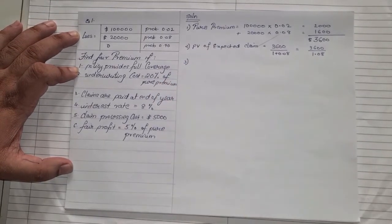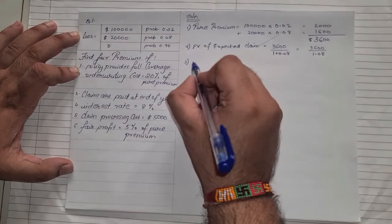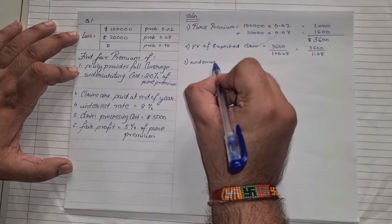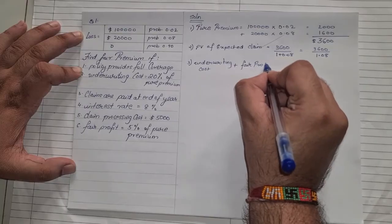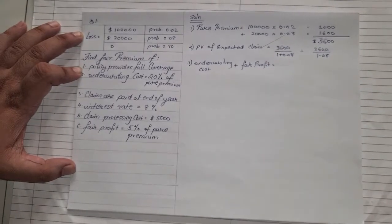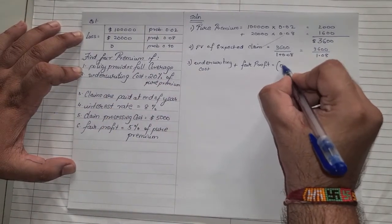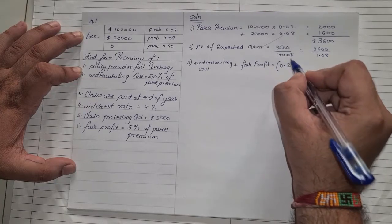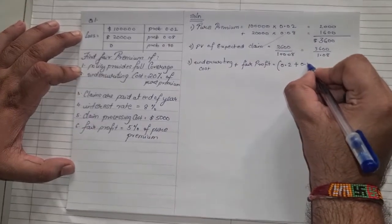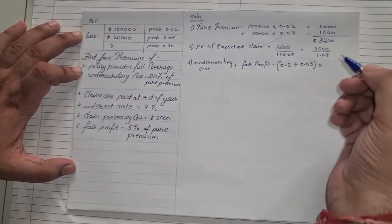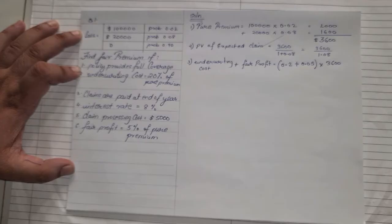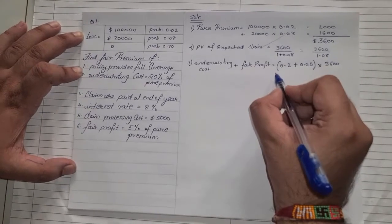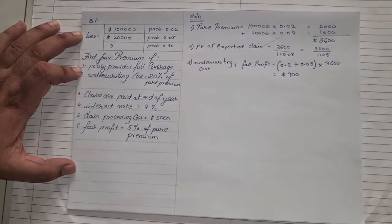Step three: calculate underwriting cost plus fair profit. The formula is underwriting cost percent plus fair profit percent, multiplied by pure premium. Underwriting cost is 20% (0.20) and fair profit is 5% (0.05), so that is 0.20 plus 0.05 equals 0.25, multiplied by pure premium of $3,600. So 0.25 into 3,600 equals $900.